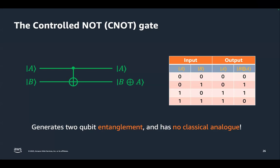Just to confirm for the CNOT gate — it only takes effect when A is 1. If A is 0, then it does not have an effect. Yes, that's correct — if A is 0, it does not have an effect on the output.